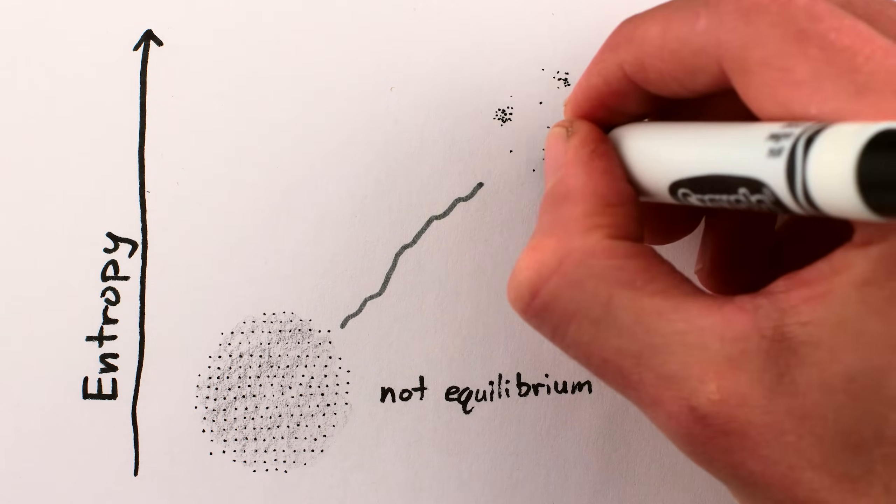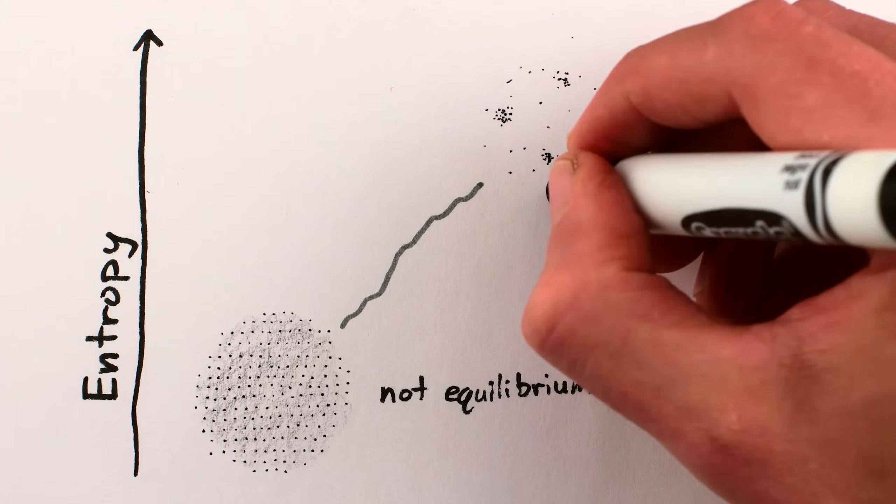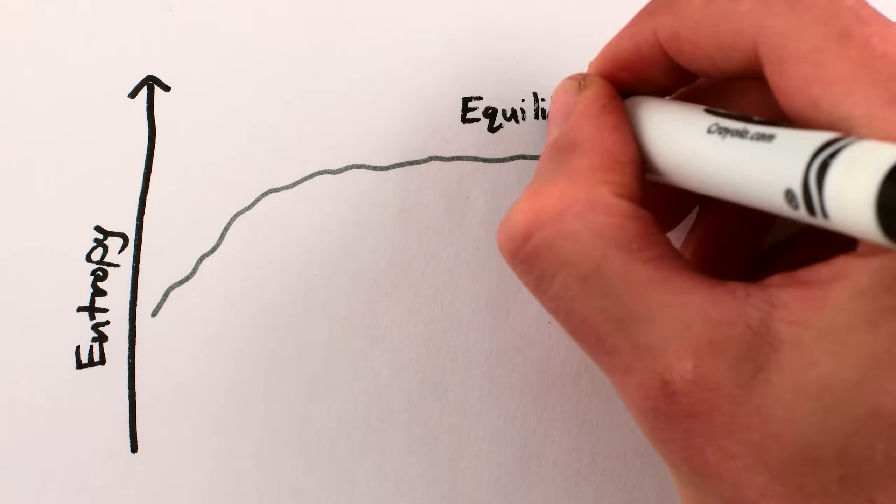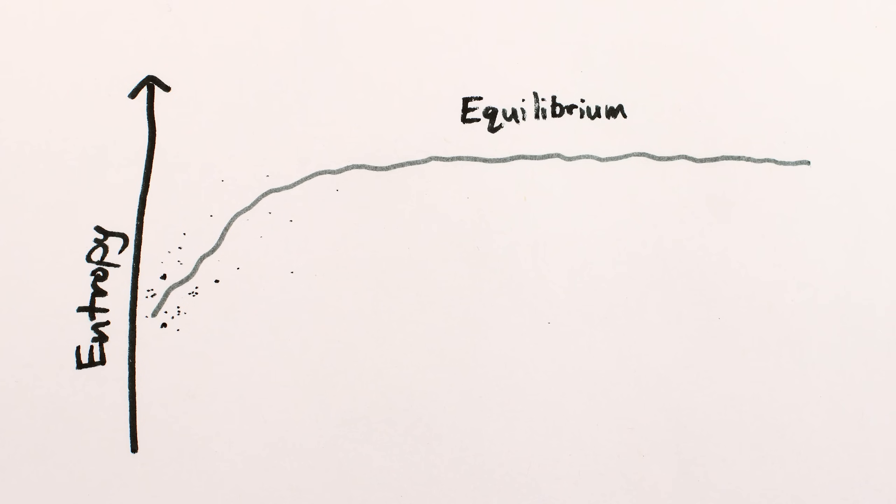Things want to be gravitationally clumped together into concentrated configurations like proto-stars, proto-galaxies, or even black holes. What would a high-entropy equilibrium universe look like? It would be empty space. And indeed, that's where we're headed.